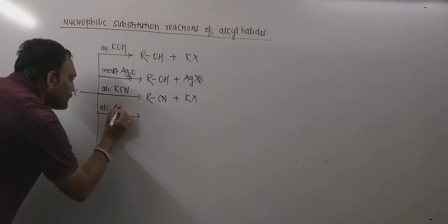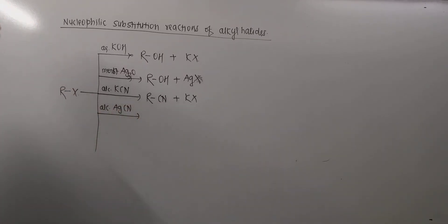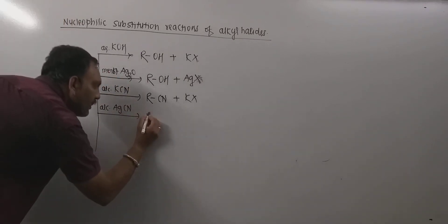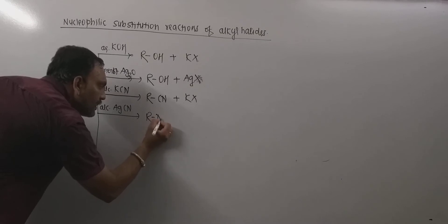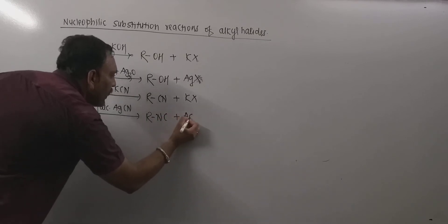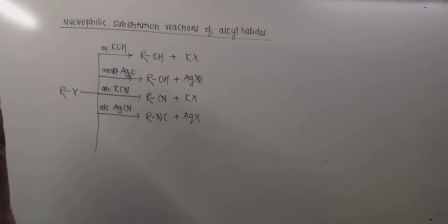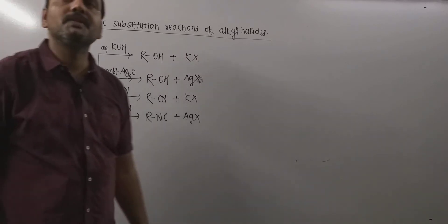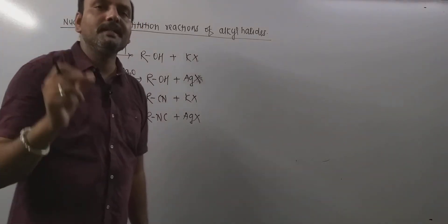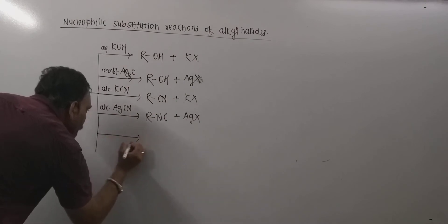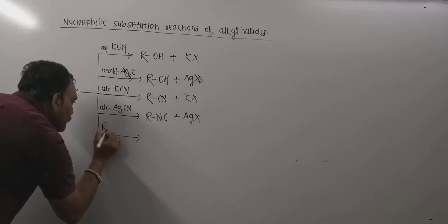Reaction with alcoholic AgCN, that is silver cyanide: when alkyl halides are treated with alcoholic silver cyanide, then alkyl isocyanides are obtained along with silver halide. Remember, alkyl isocyanides have a very disagreeable smell.